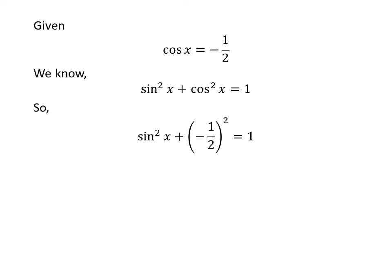Plugging the given value of cosine of x into the identity gives us square of sine of x plus square of minus half is equal to 1. We know half times half is 1 upon 4, and minus times minus is plus, so square of sine of x plus 1 upon 4 is equal to 1.